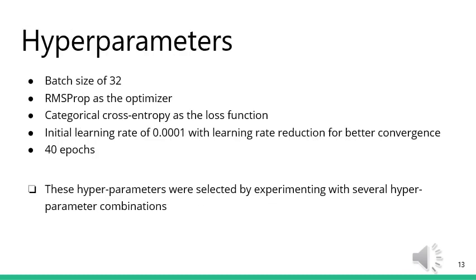I shall now describe our choices for the hyperparameters. We chose a batch size of 32, which can impact the learning algorithm's dynamics by affecting the accuracy of the error estimate as well as the speed and stability of the learning process. Small batch sizes like 32 offer a regularizing effect and lower generalization error. As the optimizer we used RMSProp, a gradient-based optimizer with an adaptive learning rate. For the loss function we used categorical cross entropy. The initial learning rate was set to 0.0001, with learning rate reduction used for better convergence. We trained the model for 40 epochs.